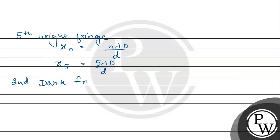The dark fringe formula is: x_m = (2m − 1) × λD / d. So for the 2nd dark fringe, x2, we put m = 2.